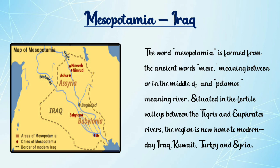This country's new name is Iraq. The word Mesopotamia is formed from the ancient word Meso, meaning between or in the middle of, and Potamus meaning river. It is situated in the fertile valleys between the Tigris and Euphrates rivers. The region is now home to modern day Iraq, Kuwait, Turkey and Syria.